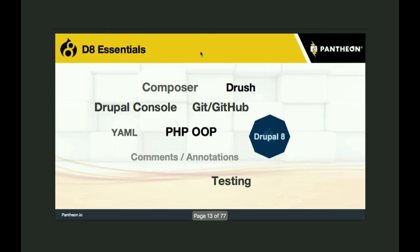Some D8 essentials — from my hard-won experience, these are concepts, software, or tools you should be familiar with if you're going to look at Drupal 8: Composer, Drush, the Drupal console, Git and GitHub, YAML files, object-oriented PHP, comments and annotations, and getting more comfortable with testing. I've written a lot of Behat, not PHP unit, and it does save you — when you make a change that breaks something unexpected, you run your Behat tests and find out immediately.